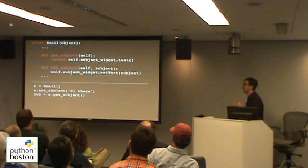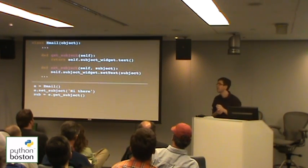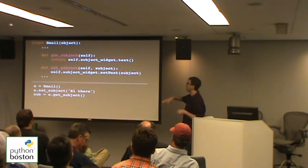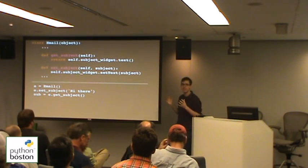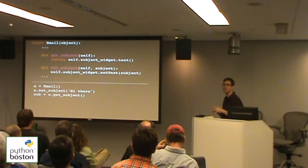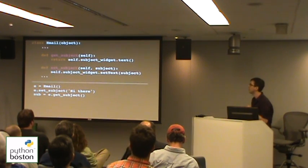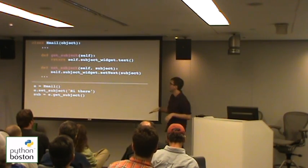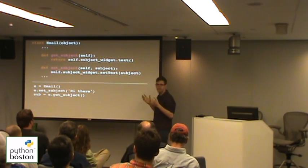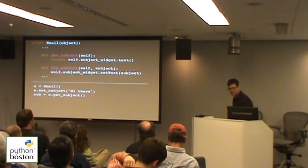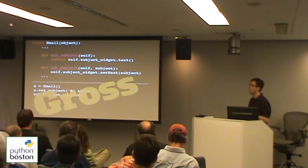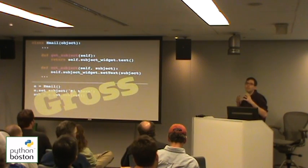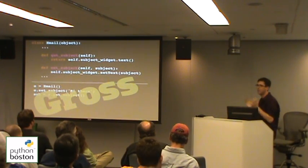The first thing you might try is just making explicit getter and setter methods — for example, for the subject field. Inside the set subject method, you grab the widget and update its text field so the widget always stays synchronized with the state of the email object. That works, but the problem is when you use the email object there are a lot of these explicit get and set calls that people find a little ugly and non-Pythonic. If you have hundreds of these in your application, the code starts to feel a little crustier.